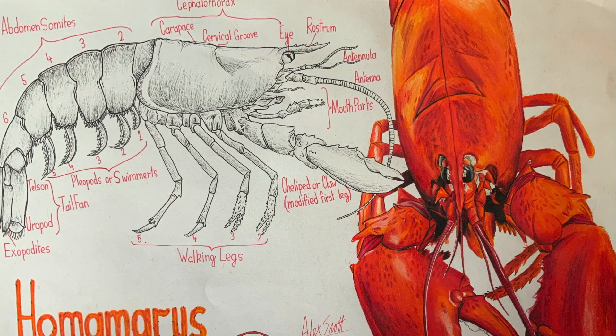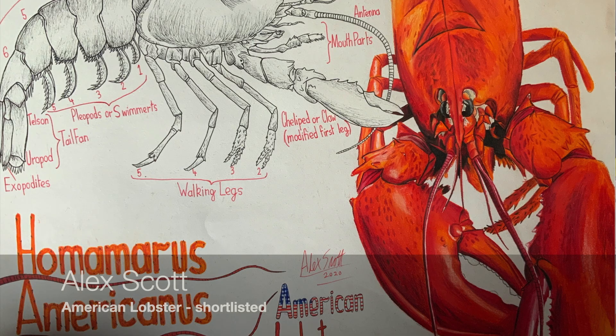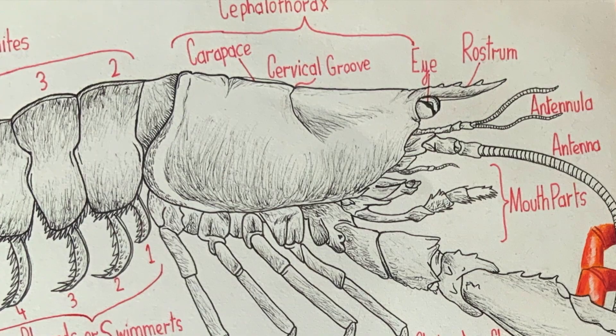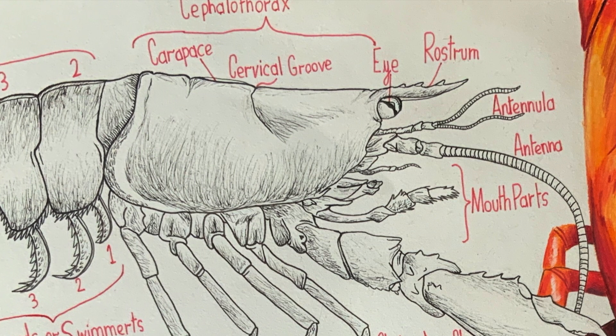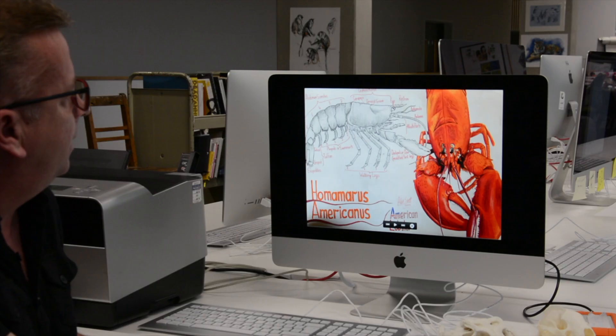And here we have a lobster — an American lobster, beautifully rendered in orange paint. Here we can see the different mouth parts: the rostrum, the antennae mouth parts, and the legs labelled up here, the front ones going into pincers.